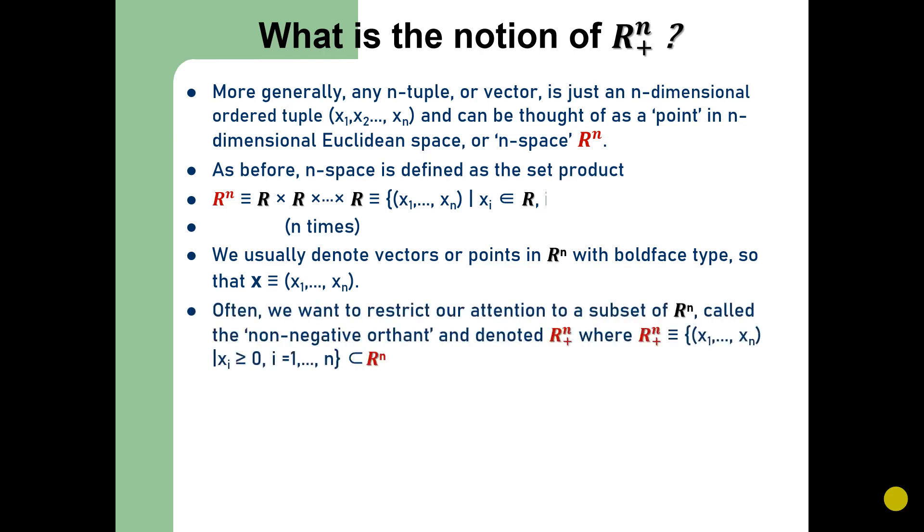Often we want to restrict our attention to a subset of R^n, and we call that subset the non-negative orthant, denoted by R^n_+, where R^n_+ is a set of n-tuples such that xᵢ ≥ 0 where i varies from 1 to n, and that is a subset of n-dimensional Euclidean space.